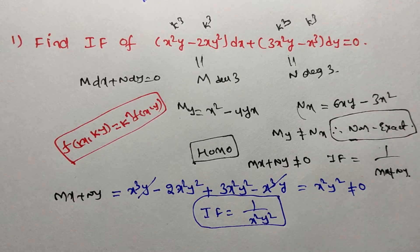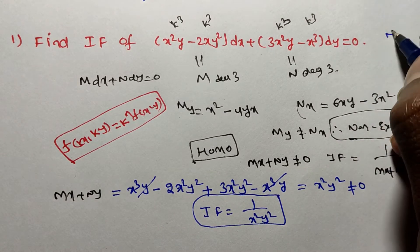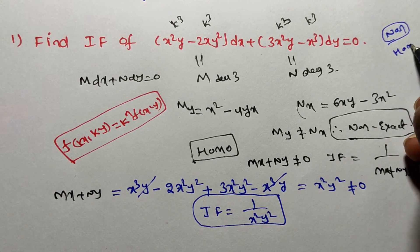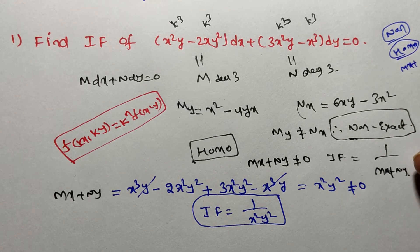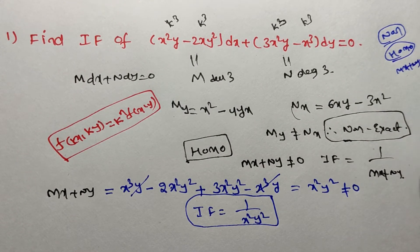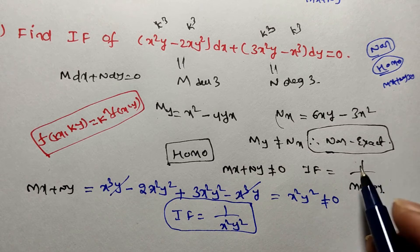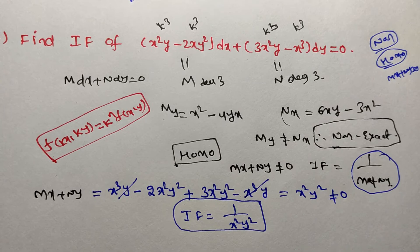So that's it. Is it clear, friends? How to find the integrating factor for the non-exact differential equation: first verify non-exact; if non-exact, verify homogeneous; if homogeneous, verify mx plus ny is not equal to 0; if mx plus ny is not equal to 0, then 1 by mx plus ny is the integrating factor.